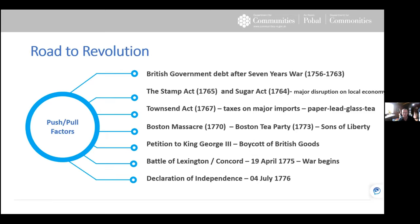Revolutionary ferment was starting to stir — petitions to King George, boycotts of British goods. In 1775 things reached a head with the battles of Lexington and Concord — minor skirmishes, but with casualties, and the war had officially begun. This was no longer just rebellious militias; it was coming into a full-scale war, culminating in the Declaration of Independence on the 4th of July 1776.